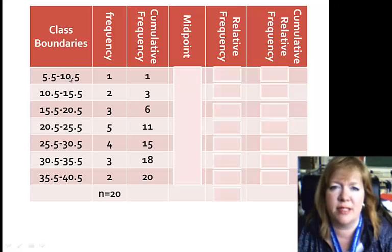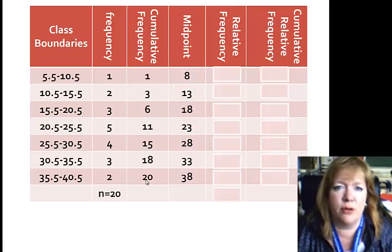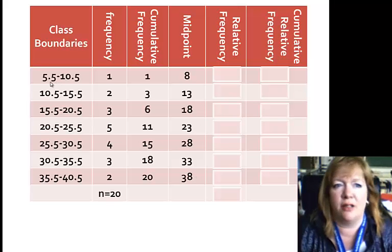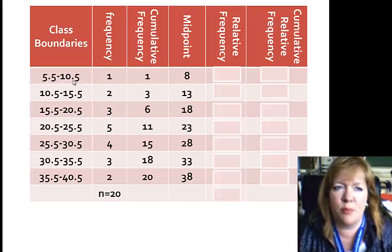N equals 20 is the total number of data values that we have. To find the midpoint, if you take your class boundaries, sum them, and divide by 2, that'll give you the midpoint. So to fill in the midpoints that you have from top to bottom, you can fill this in on your notes: 8, 13, 18, 23, 28, 33, and 38. Again, you just add the two class boundaries, 5.5 plus 10.5, and divide by 2.